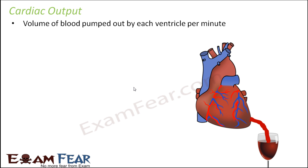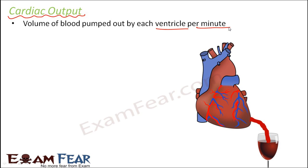Since the very beginning, I have been talking about the heart being a pump. The job of the heart is to pump blood to various parts of the body — to the lungs and to different other parts. So it is also important to know how much blood is pumped out by the heart. Cardiac output is defined as the volume of blood that is pumped out by each ventricle per minute.